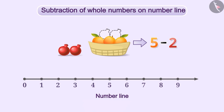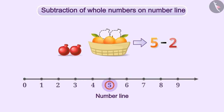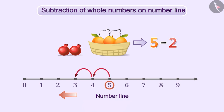First number is five, so we will start with five on the number line. Since we have to subtract number two from five, we will take two steps to the left, from five to four and four to three. We will use arrows pointing towards the left direction. The last arrow points to three. Thus, the subtraction of two from five gives three. That is, five minus two is equal to three.